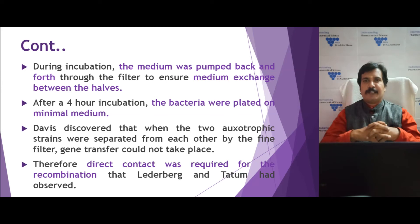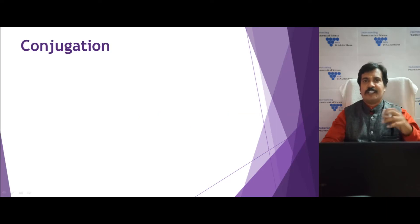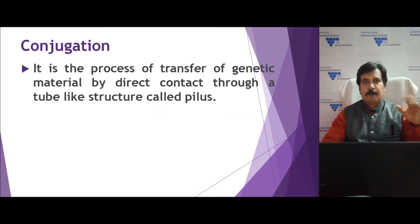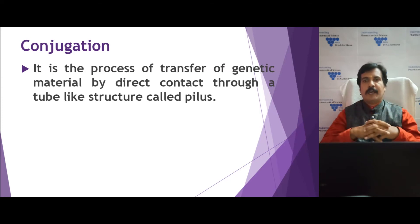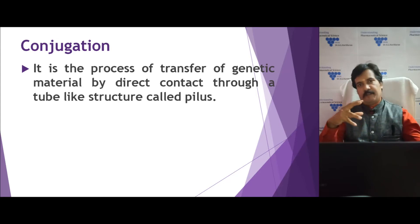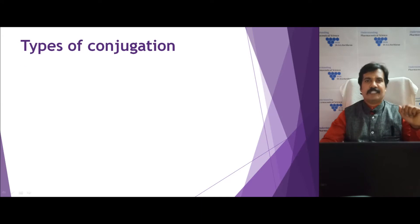Later on, the understanding of bacterial conjugation evolved. Conjugation is simply a process that transfers genetic material from one bacterium to another by direct contact only. This direct contact happens through a tube-like structure called the pilus, from a fertile strain to a non-fertile strain.